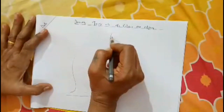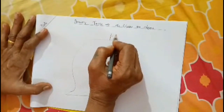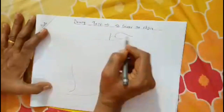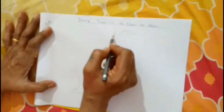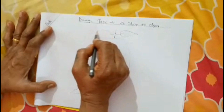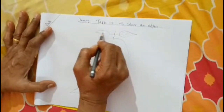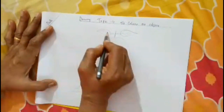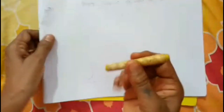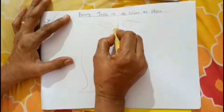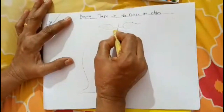Draw the leaves. Take the color. What is the color of the mango? Yes, yellow. Start the coloring.